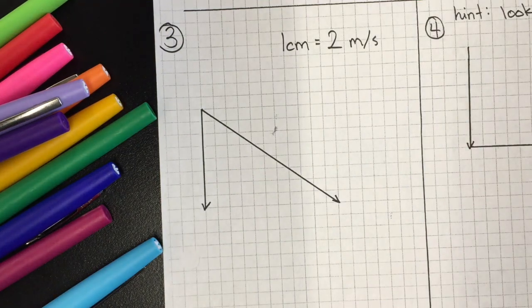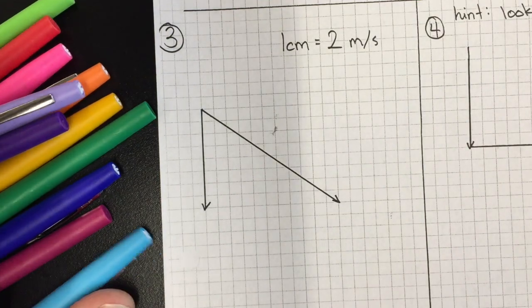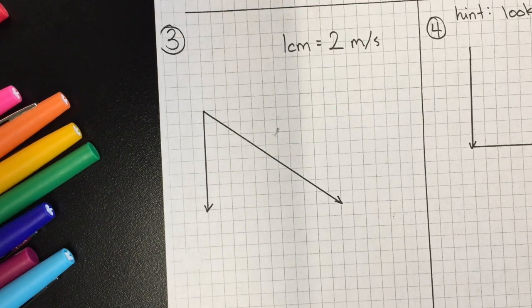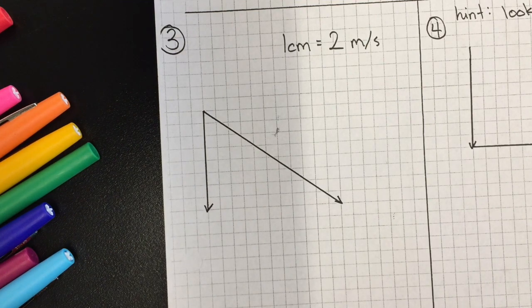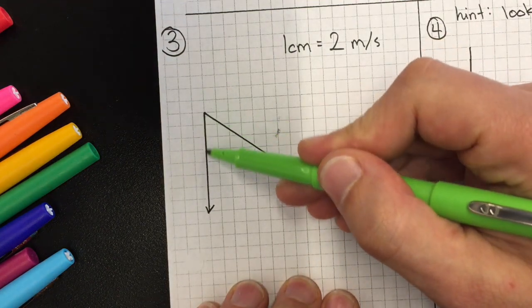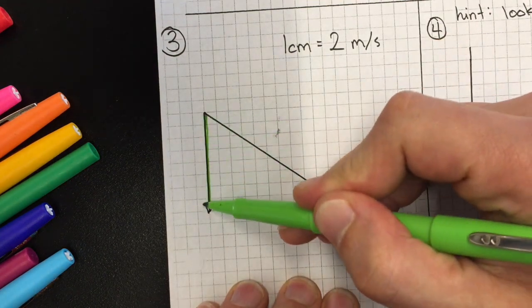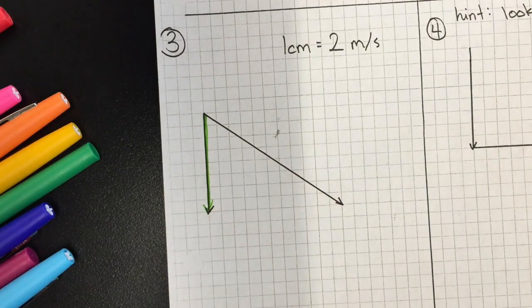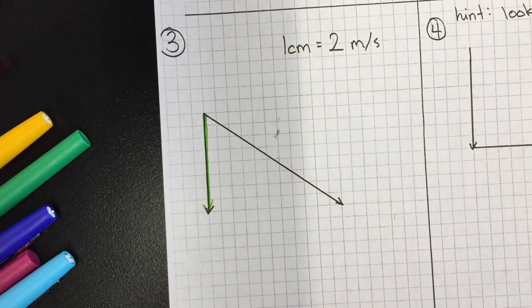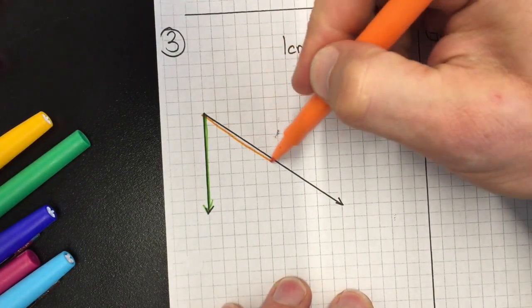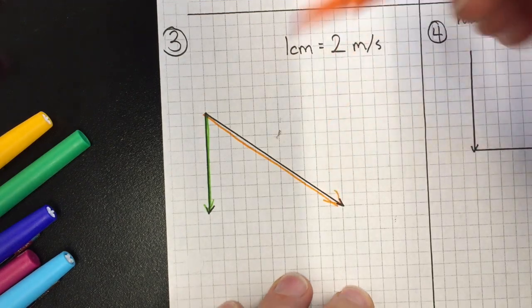Let's take a look at this problem. We have two vectors and we're asked to find the resultant, and they also want to know what is the magnitude and angle of that resultant. So I'm just going to color code these so it's easier to talk about them. I have a green vector pointed straight down and I have this orange vector pointed down into the right.